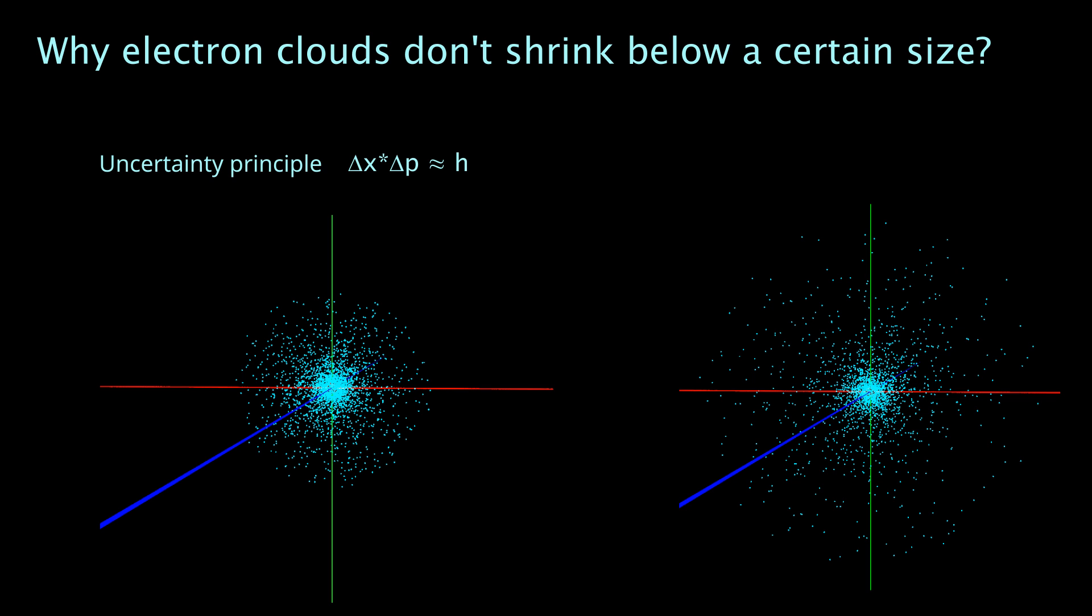And again, there is an optimum of the size of this s-orbital which has the lowest amount of energy. This is also important for larger molecules because in the case of larger molecules the orbitals are pretty large. So the electrons in these large orbitals are pretty slow because of this uncertainty principle. And this is one way how they can lose energy.